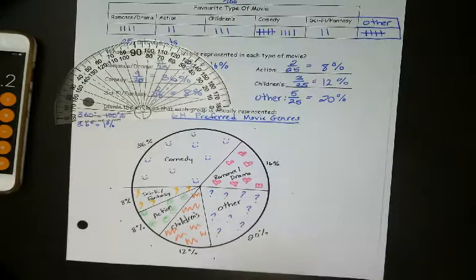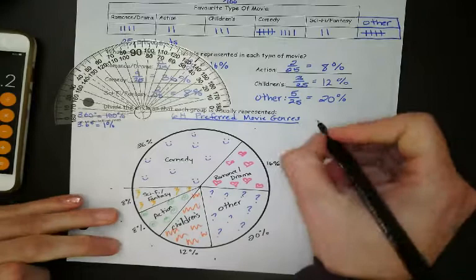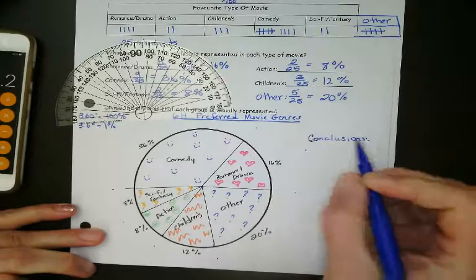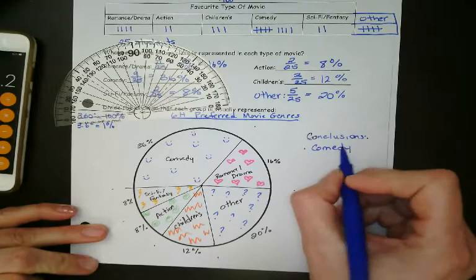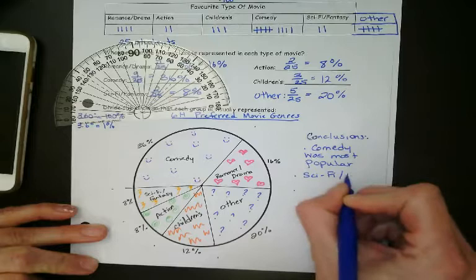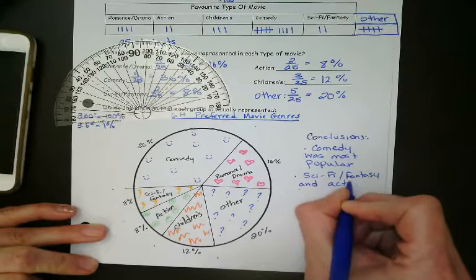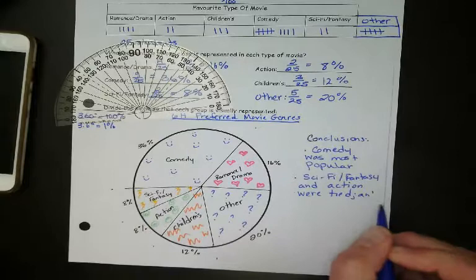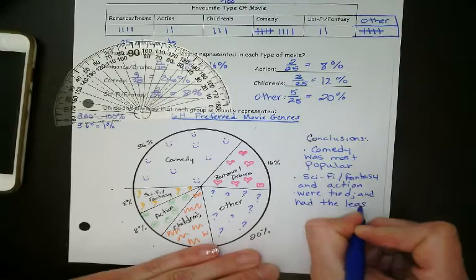Okay, awesome. So same thing for this graph, you guys. We can make some conclusions based on what we see. This black pen is running out, let's use blue. So same thing. I can see that comedy was most popular. Pretty obvious that it takes up the biggest chunk of the pie. And we can say sci-fi and fantasy and action were tied and had the least. Now, same thing, go ahead and challenge yourself. Make one more conclusion on your own.